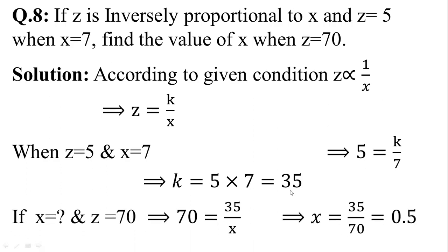Now we can find the value of x when z equals 70. Putting the values: 70 equals 35 upon x. This implies x equals 35 divided by 70. Dividing 35 by 70, this implies x is equal to 0.5.